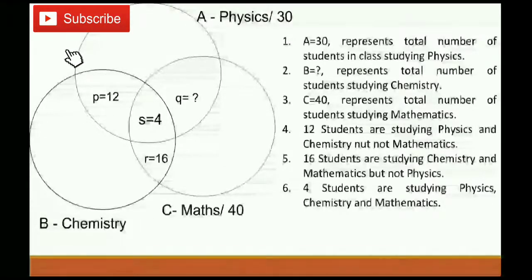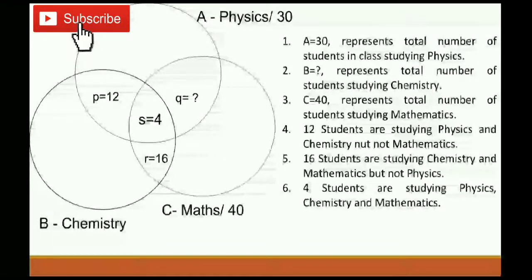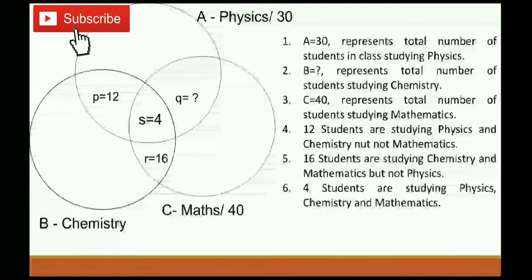16 students are studying chemistry and mathematics but not physics. The chemistry and mathematics intersected region is R, which does not include physics, so the value of R is 16. 4 students are studying physics, chemistry and mathematics — all three subjects. That region is represented by S, and its value is 4. Based on this data, we will solve some questions.